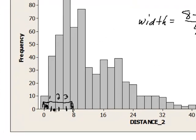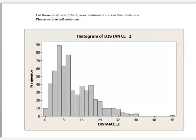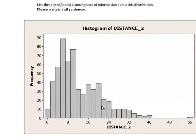So the width of each bend is 2. So this starts at 0, this would be 2. Then we add another 2 and that would be 4. And then we add another 2 and we would get 6, and so on. So now we know that the class width is 2.